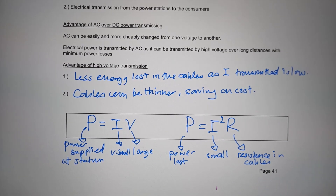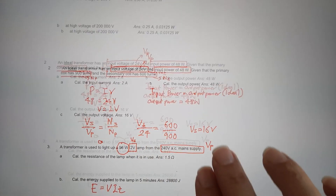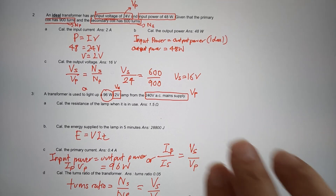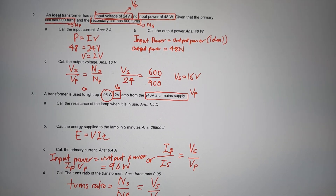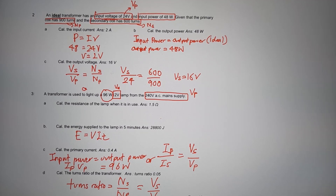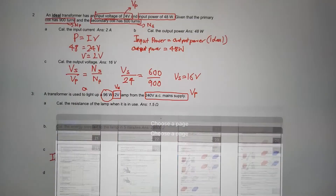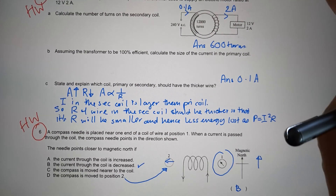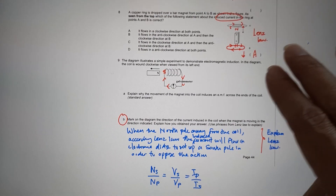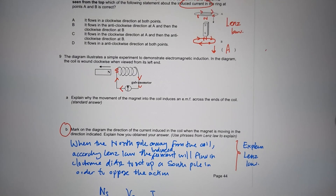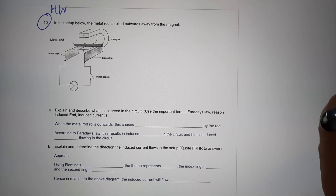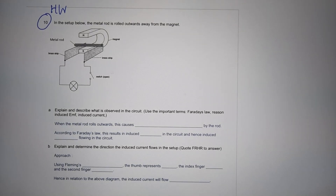That is a very quick revision. What you need to do now is look at the various kinds of questions you have. The calculation aspect is usually not too difficult — just be careful to identify what is the input voltage Vp and what is the output voltage Vs. Also recall that input power equals output power for an ideal transformer. Practice lots of questions on electromagnetic induction, especially applying Lenz's Law, as the questions can look unusual. Always bear in mind to use your keywords and key phrases correctly.